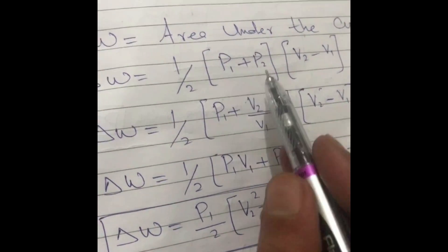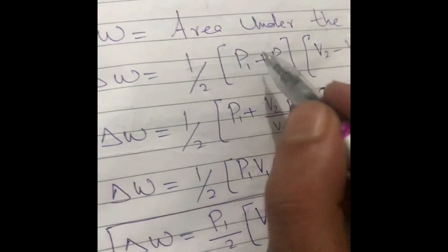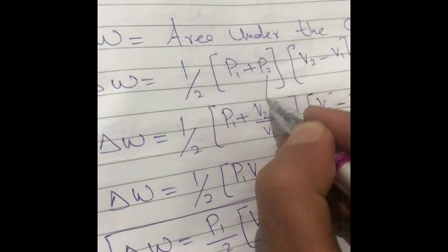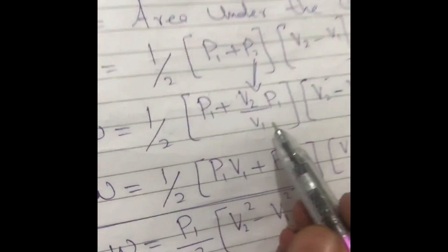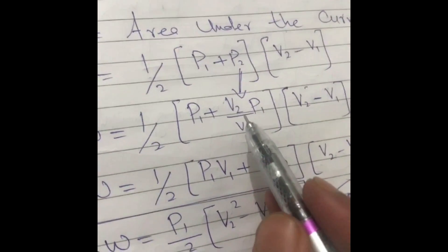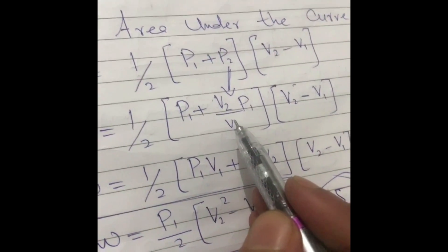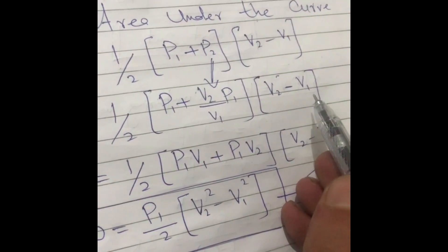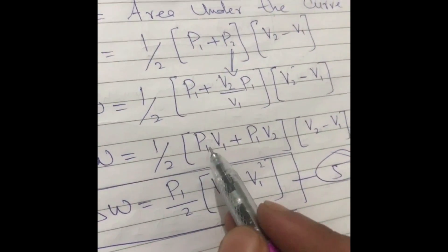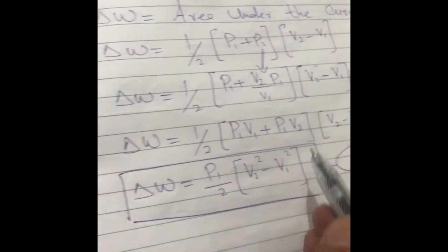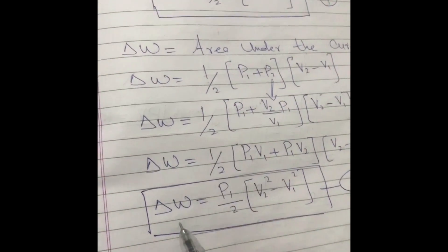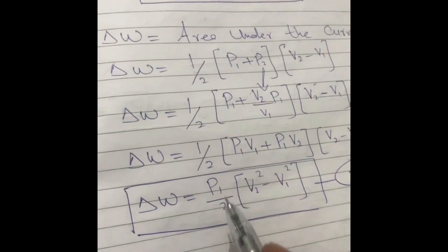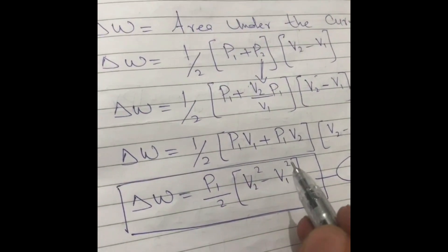So delta W equals one-half times (p1 + p2) times (v2 − v1). Substituting p2 = (v2/v1)·p1 from equation 2, and simplifying, delta W equals (p1/2)·(v2 − v1)·(1 + v2/v1), which after simplification gives delta W = (p1/2v1)·(v2² − v1²).